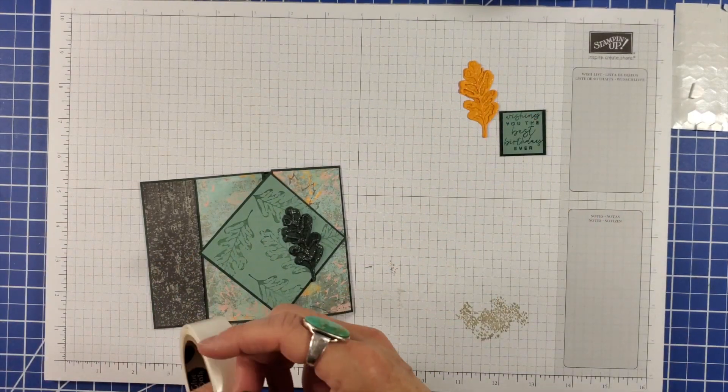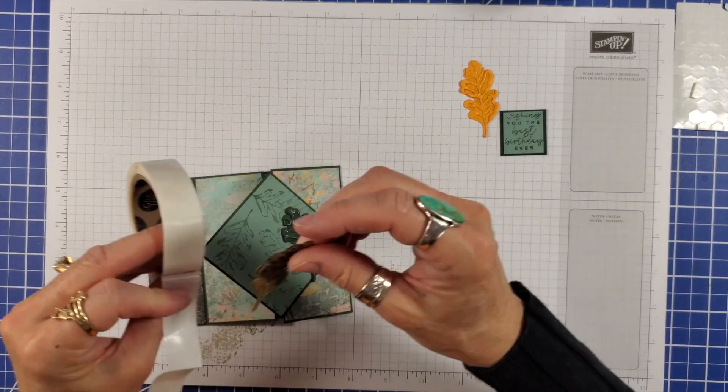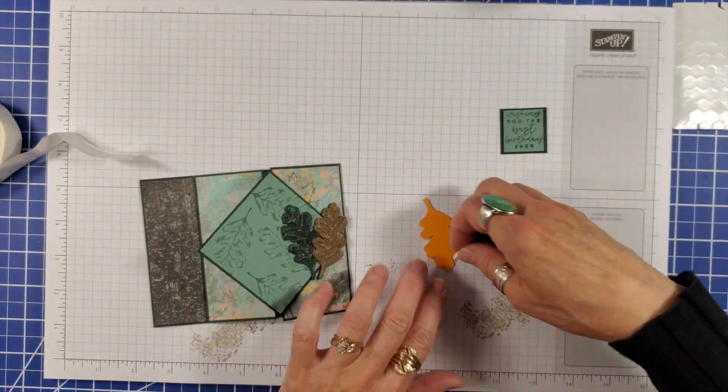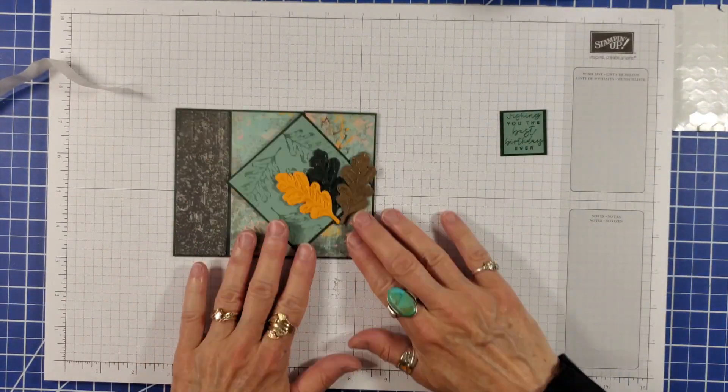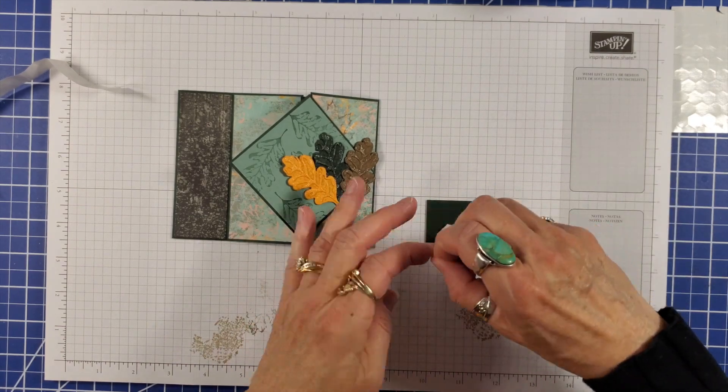Add the leaves using a combination of glue dots and dimensionals. Then add the sentiment with dimensionals.